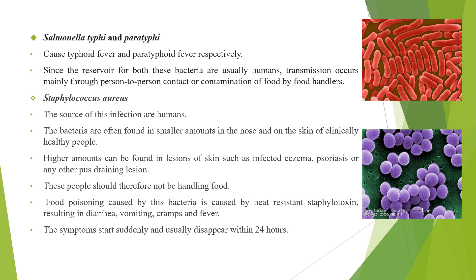Next, Staphylococcus aureus. The source of these infections is humans. The bacteria are often found in smaller amounts in the nose and on the skin of clinically healthy people. Higher amounts can be found in skin lesions such as those infected by eczema, psoriasis, or other pus-draining lesions. These people should not be handling food. Food poisoning caused by this bacteria involves heat-resistant staphylococcal toxins resulting in diarrhea, vomiting, etc. Symptoms usually start suddenly and disappear within 24 hours.